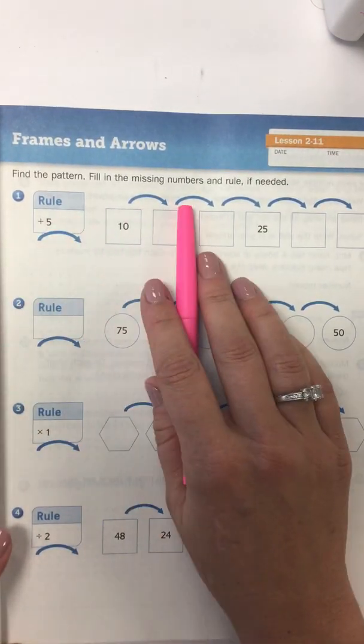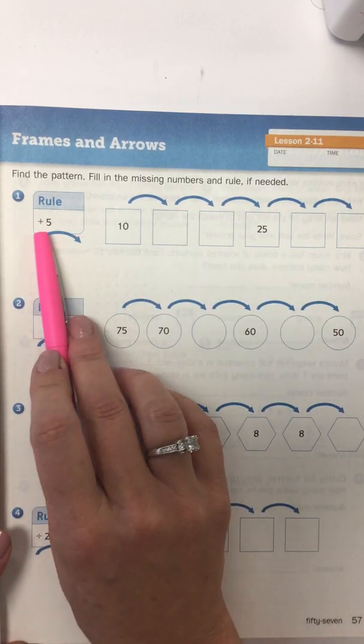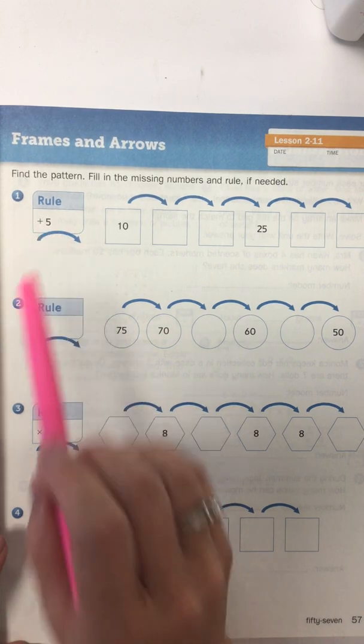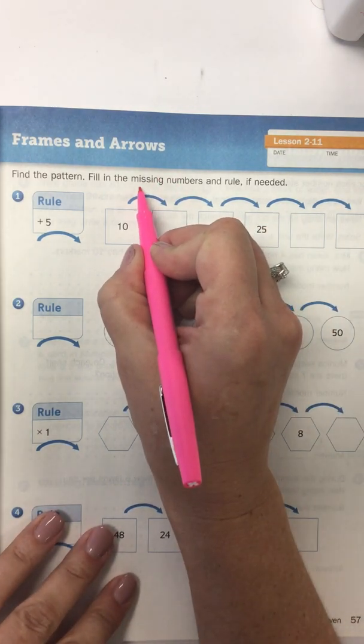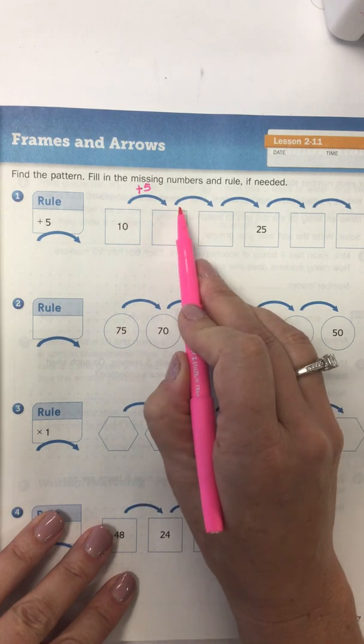Find the pattern and fill in the missing numbers and rule if needed. So my rule means that every time I see this arrow moving in this direction, I'm going to add five. So to help myself get organized, I'm going to go ahead and write add five above every arrow that I see that goes in that direction.